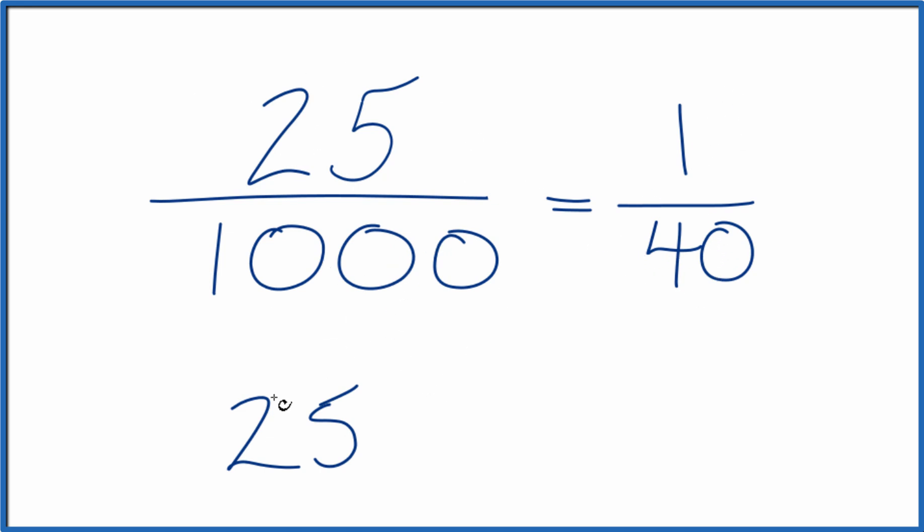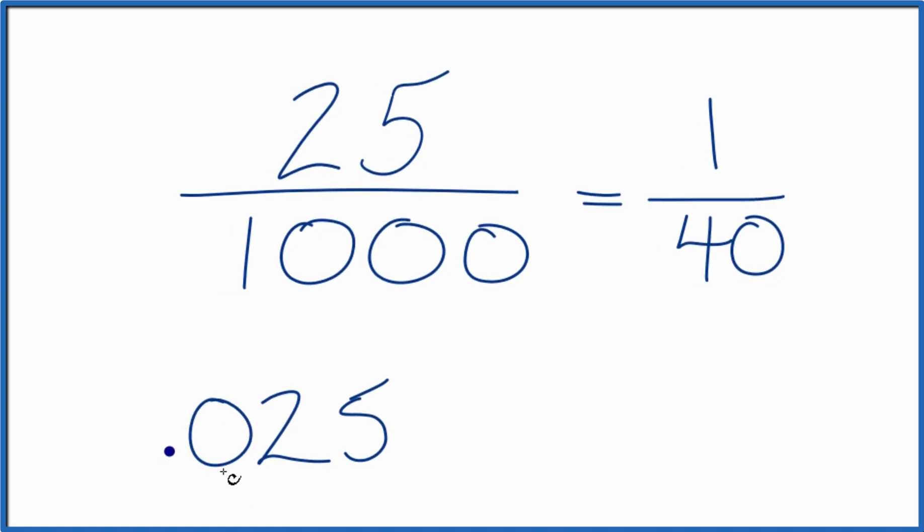So if we divide 25 by 1,000, essentially what we're doing is we have our decimal point here in the zero. We're just moving this 1 to 3 places: 1, 2, 3 places. We'll put our zero in. Let's put a zero in front. And we end up with 0.025. That's our decimal for 2.5%.